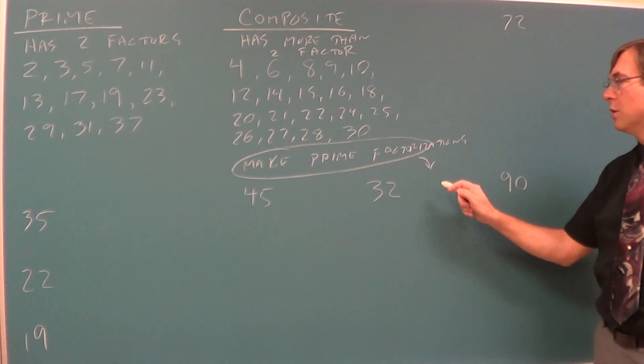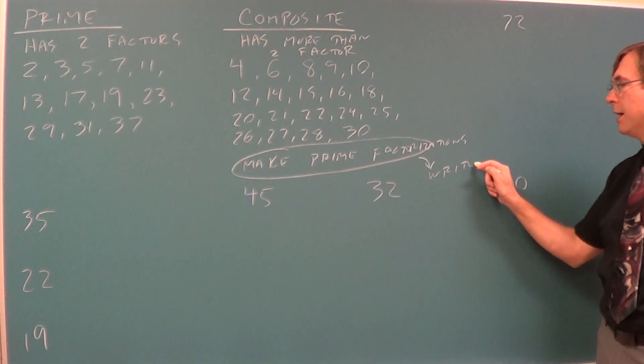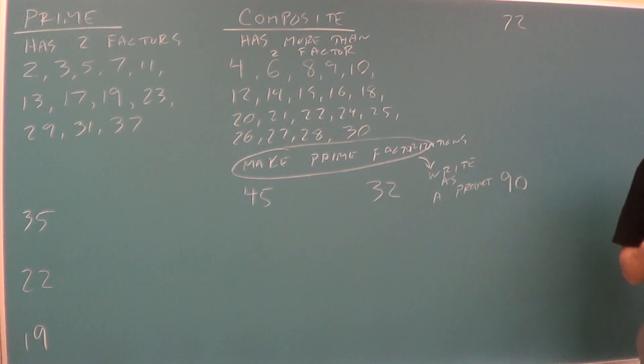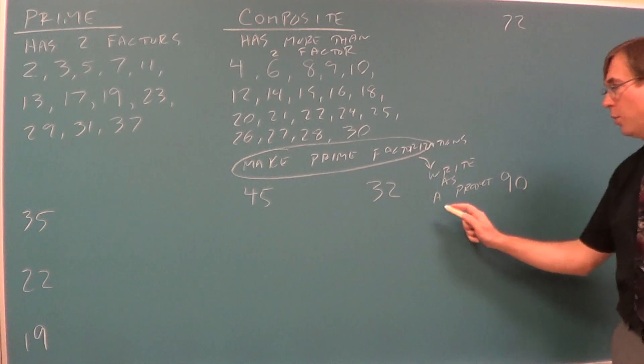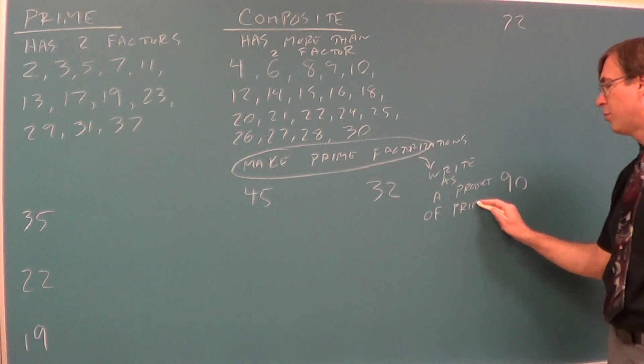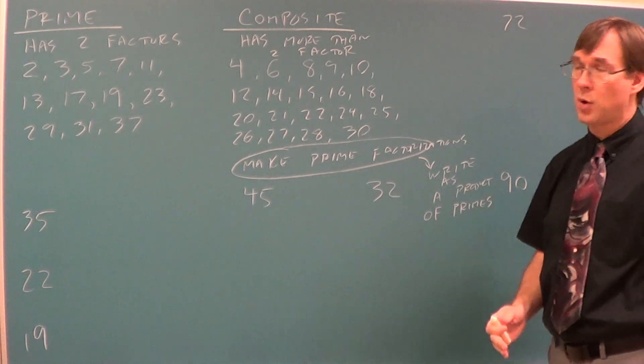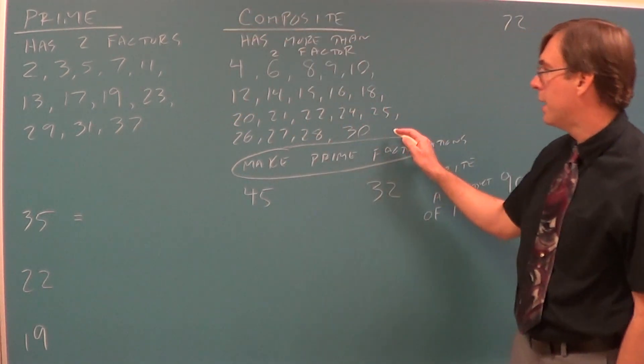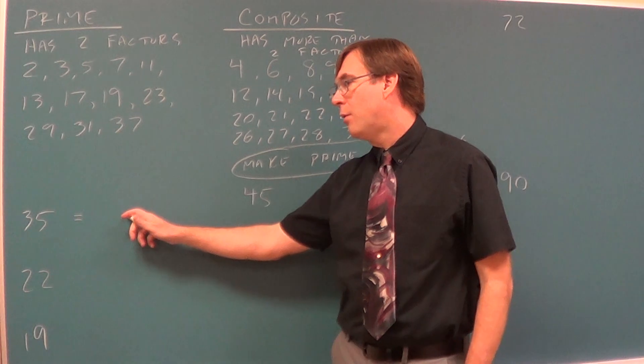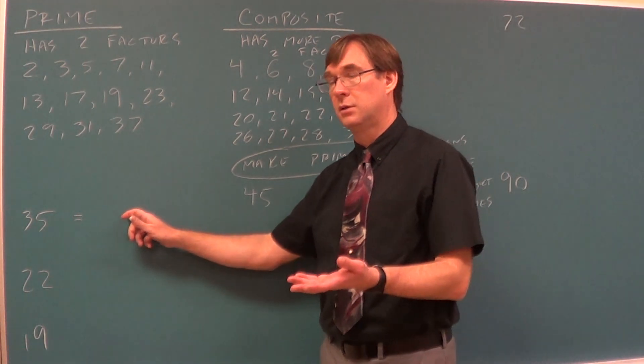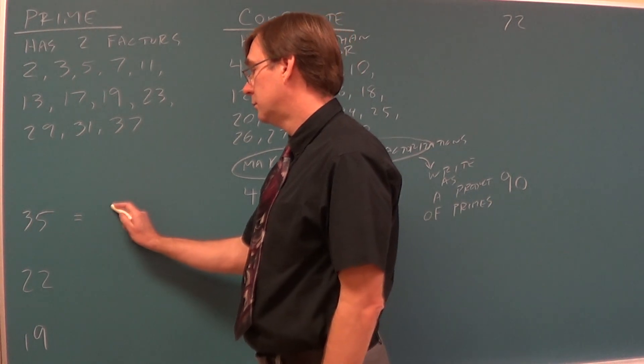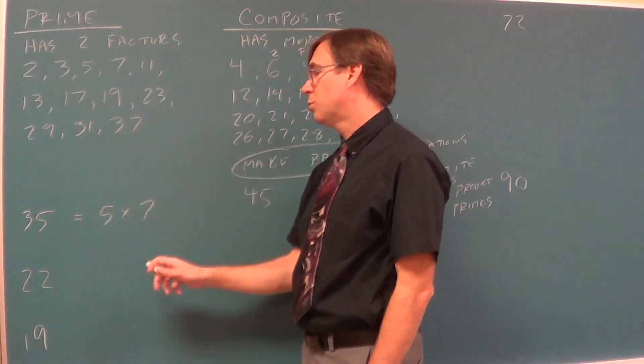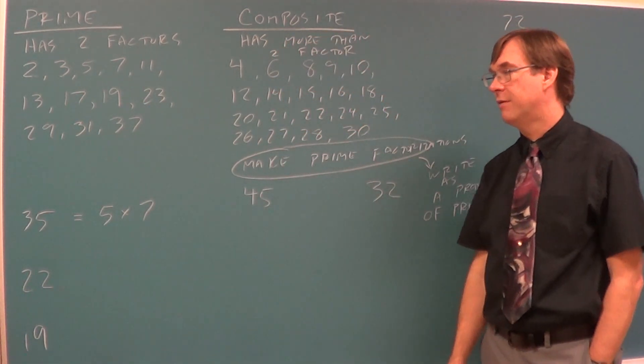So, ignoring one and ignoring itself, if any other number goes in, that makes the number be composite. What we're going to look to do to our composite numbers is make a thing called prime factorizations. Which you've done before. Sounds scary. It's not. What we do with these prime factorizations is to write a number as a product. What's product mean? The answer of multiplication. It's when we multiply. We're going to write this as a product of primes. In our answers we can only have primes, and we're looking to do multiplication. So thirty-five is a composite number. If I want to write thirty-five as a product of primes. Five times seven. Five times seven makes thirty-five. Five is a prime. Seven is a prime. That is a prime factorization.